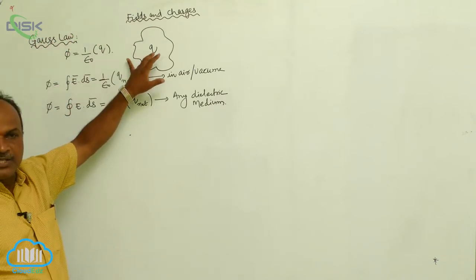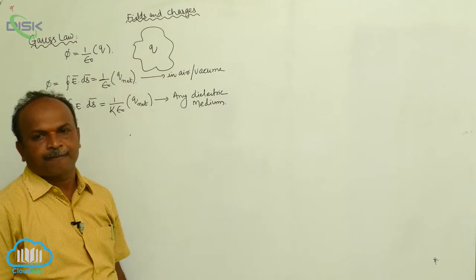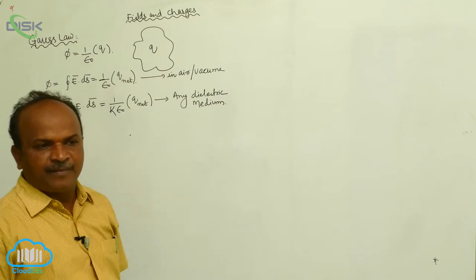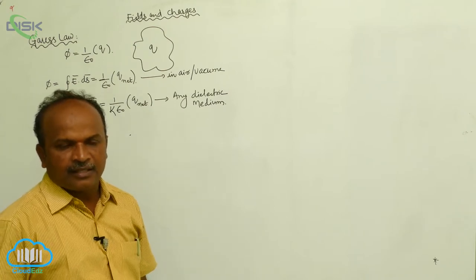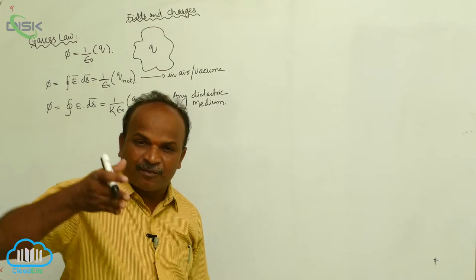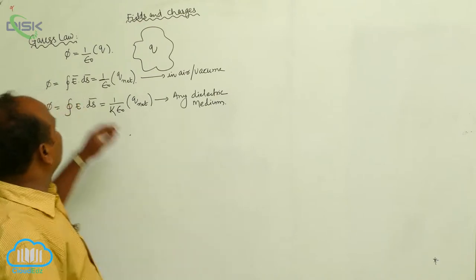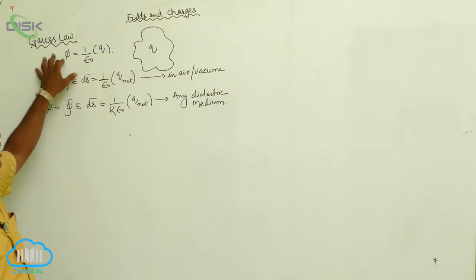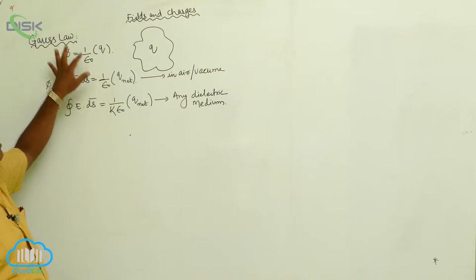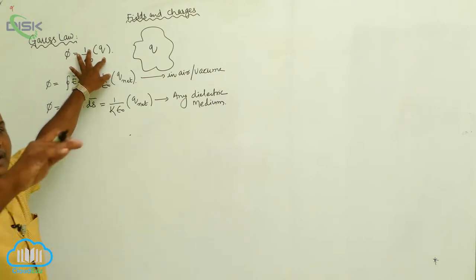There is a charge, and around the charge there is any closed surface. That closed surface may be symmetric or asymmetric. The flux passing through the closed surface is equal to 1 by epsilon-not times the net charge enclosed within that surface.